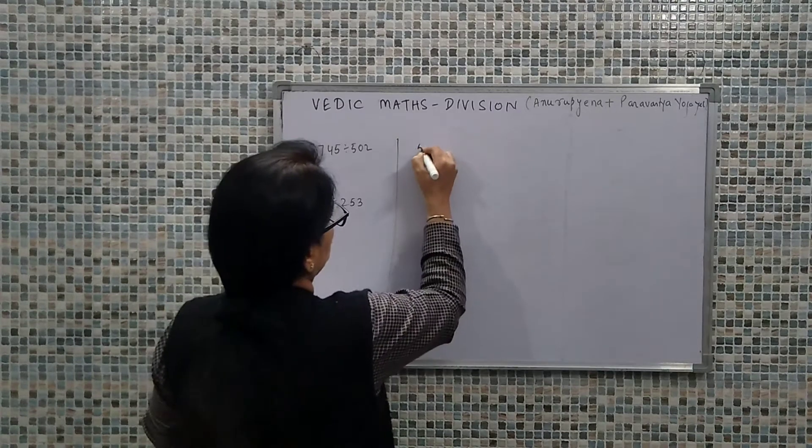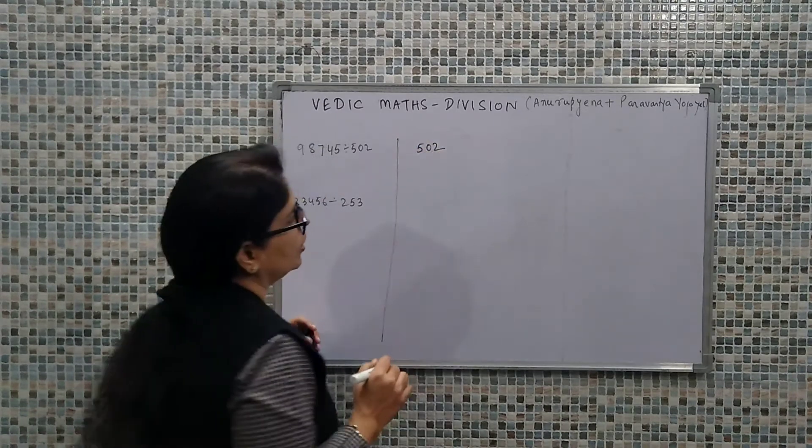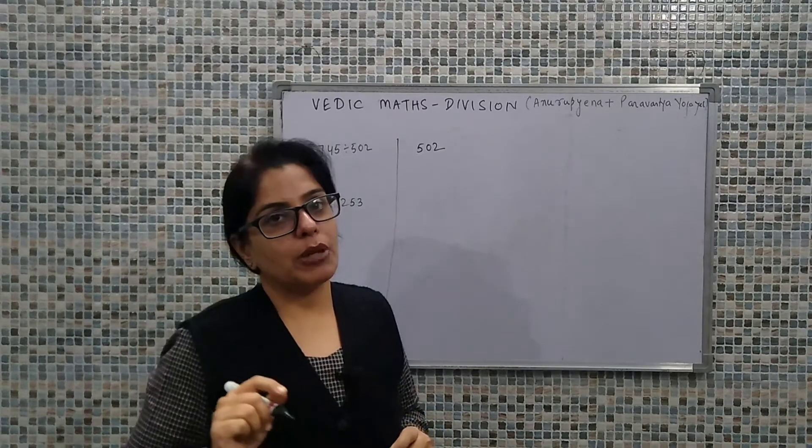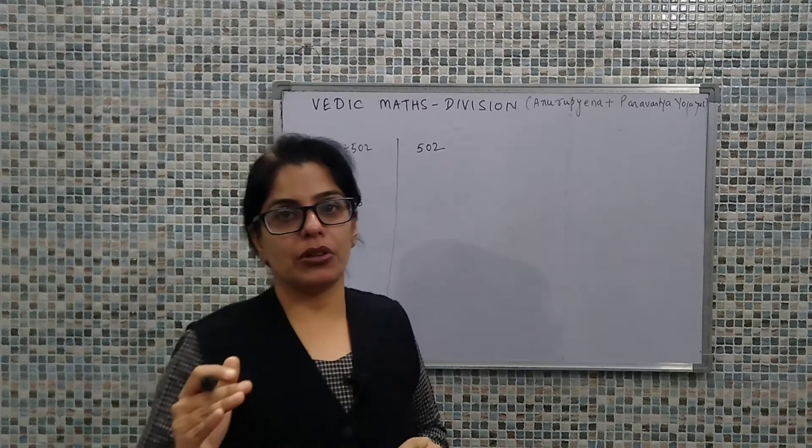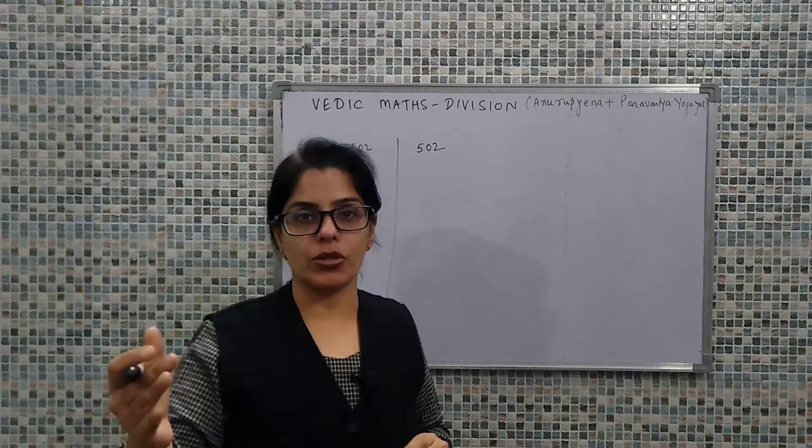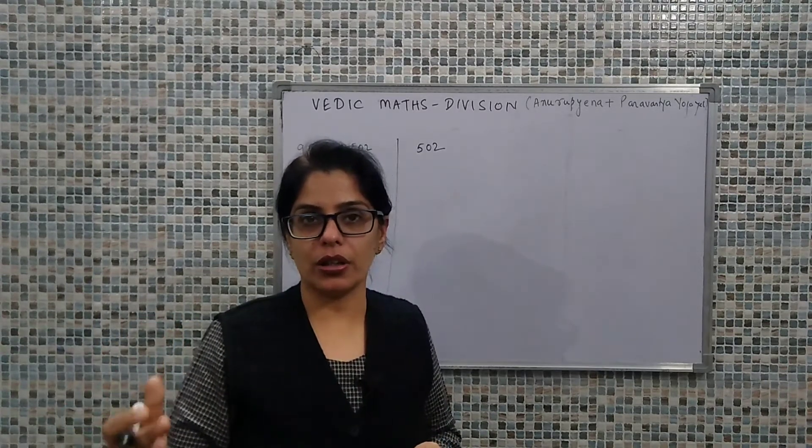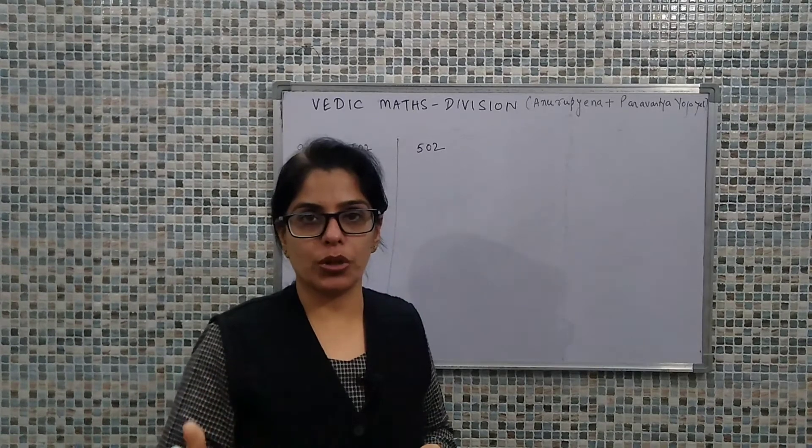So let's start with the first. Let's understand the divisor. Our divisor is 502. Now if we have 502, this number is not close to 1000. If we take base values 100, 1000, 10000, this number is not close to 1000.